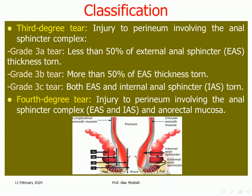As you see in the picture, you can see the internal anal sphincter in this area, and the external anal sphincter, which is divided into three parts: subcutaneous, superficial, and deep. On the other side, this explains the three subtypes of third degree — 3A, 3B, 3C — and the fourth degree perineal tear, which includes both external and internal sphincters.